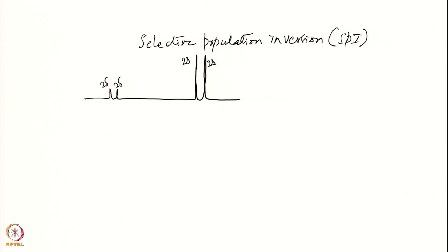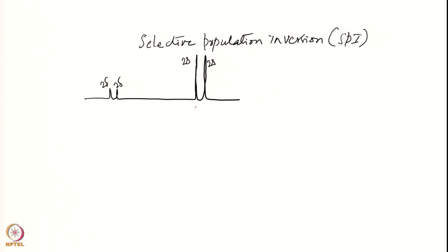If I do an inversion on one of these transitions — say I do an inversion here — inversion means I apply a selective 180° pulse on that particular transition. So as a result of this inversion, I will get a spectrum where the intensity of these two weak lines gets enhanced. Let's say these ones were X1, X2, and these ones were A1, A2. If A1 is inverted, what kind of spectrum will I get?